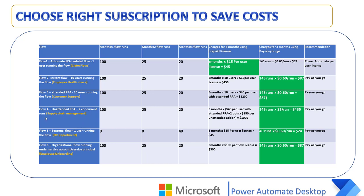Scenario four involves unattended RPA with two concurrent runs — for example, supply chain management. The runs are again 100 in month one, 25 in month two, and 20 in month three. Using the prepaid plan: $40 per user with attended RPA plus two bots at $150 per unattended add-on, giving a total of $1,020 for three months. With pay as you go: 145 runs × $3 per run = $435. For cost savings, we recommend pay as you go.